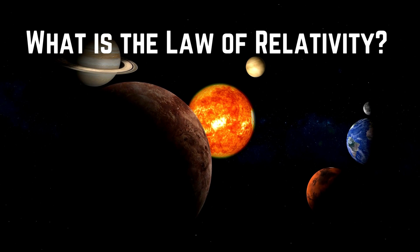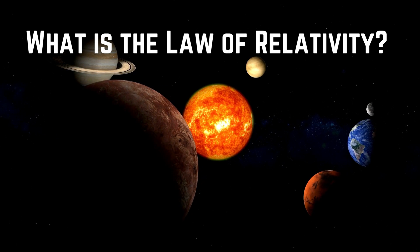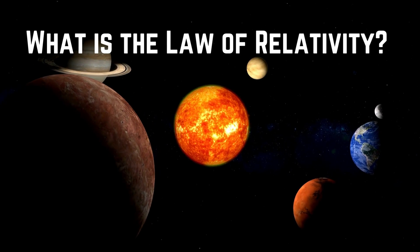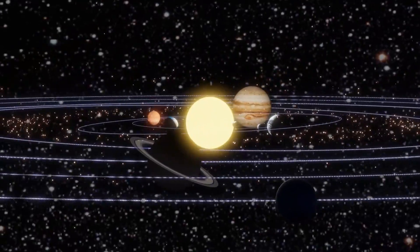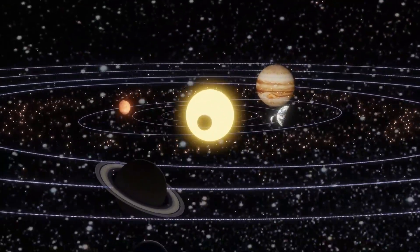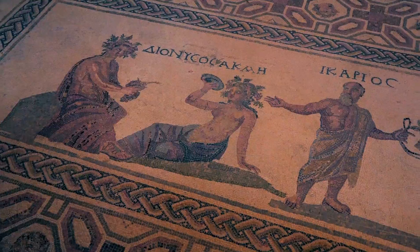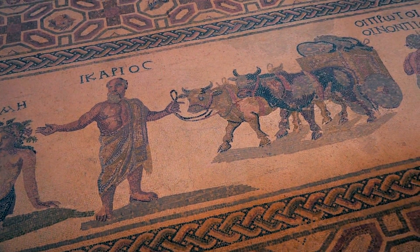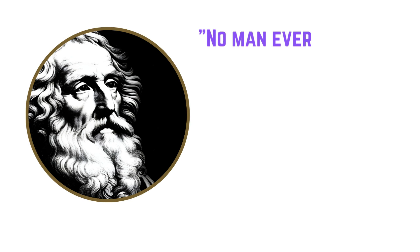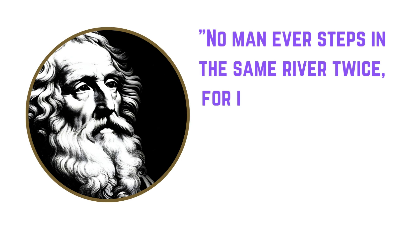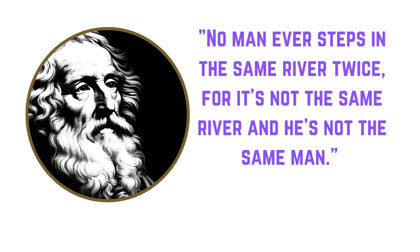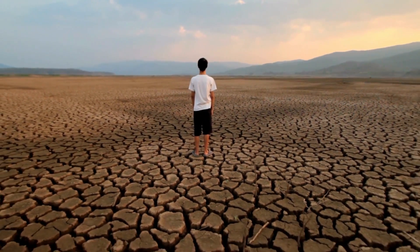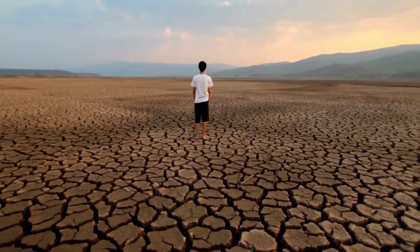What is the Law of Relativity? The Law of Relativity states that everything in the universe is relative to everything else. This means that nothing has an absolute value or meaning — it only exists in relation to other things. The concept of relativity can be traced back to ancient Greek philosophy, where Heraclitus famously said that no man ever steps in the same river twice, for it's not the same river, and he's not the same man. This idea suggests that everything in the world is constantly changing, and is therefore relative to time and perspective.